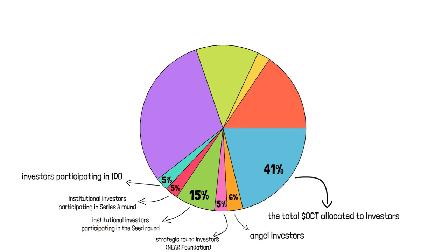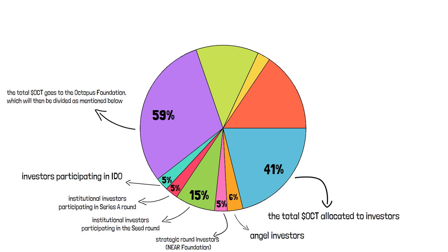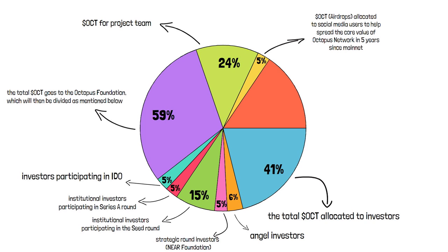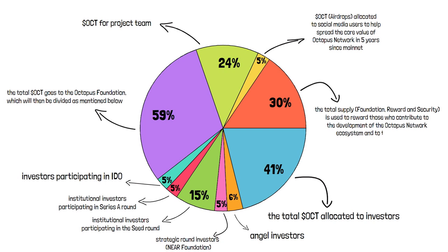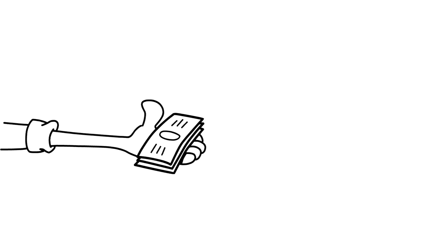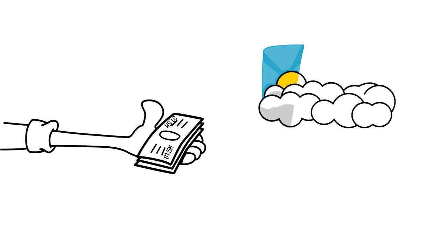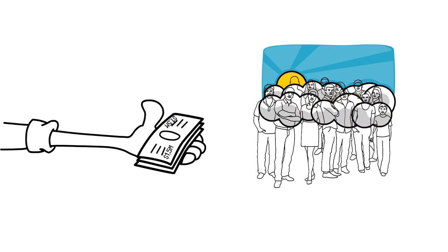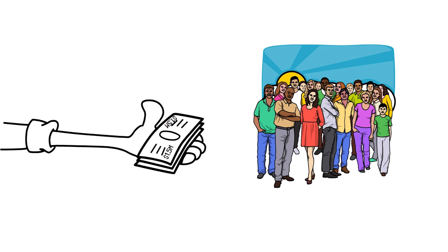The remaining 59% of total OCT tokens goes to the Octopus Foundation, divided as follows: 24% for the project team, 5% for OCT airdrops allocated to social media users who spread the core values of Octopus Network within five years of mainnet, and 30% of total supply for foundation rewards and security — used to reward those who contribute to the development of the Octopus Network ecosystem. Approximately $1.5 million is allocated to the project team to develop, maintain, and promote the ecosystem, with funds projected to be sufficient for four years of operation.